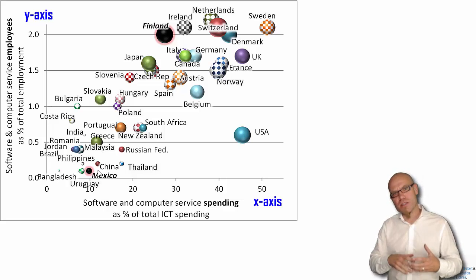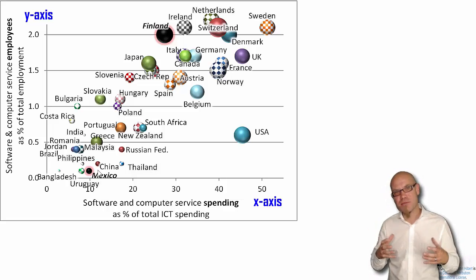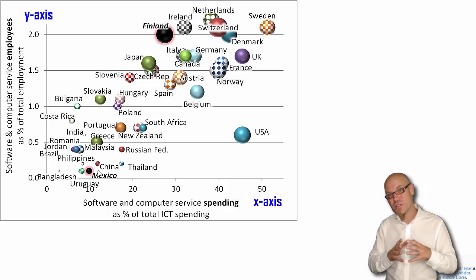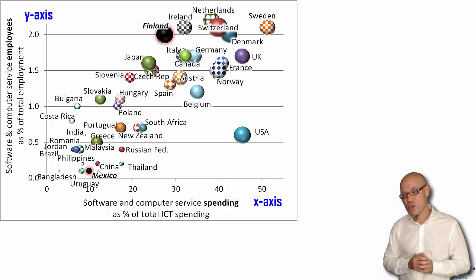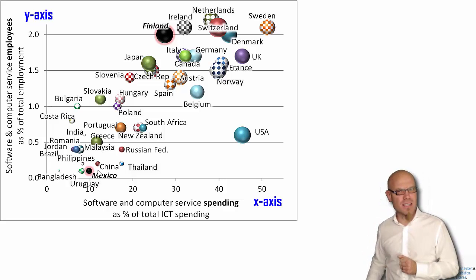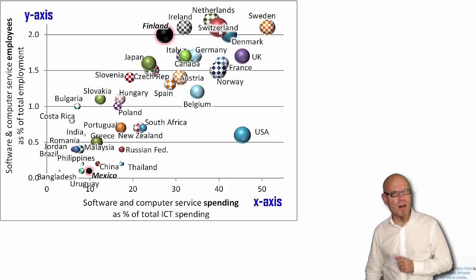So developed countries, since they also generally have larger ICT budgets, have more to spend on these kinds of software services. A second thing we can see, now combining these two axes, is that there's a positive correlation.